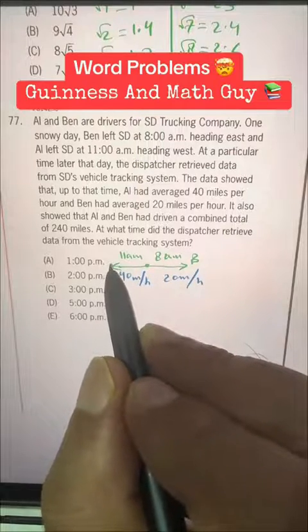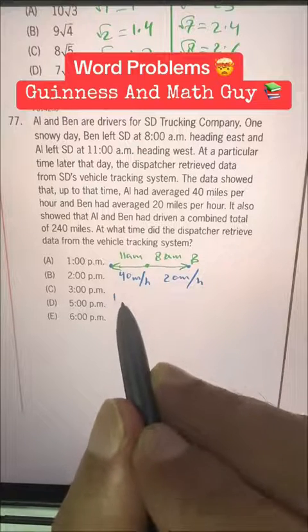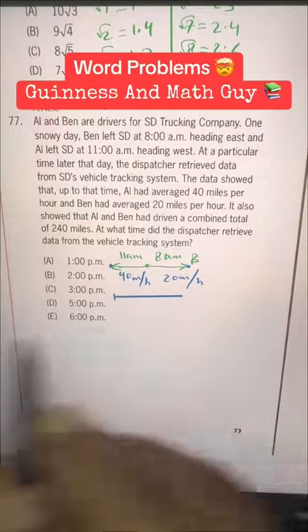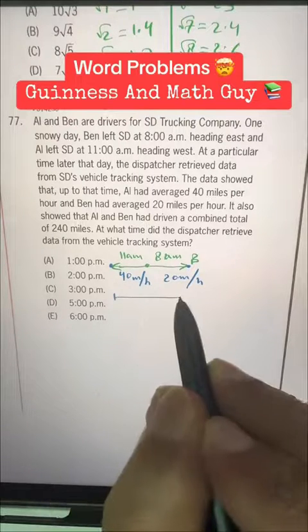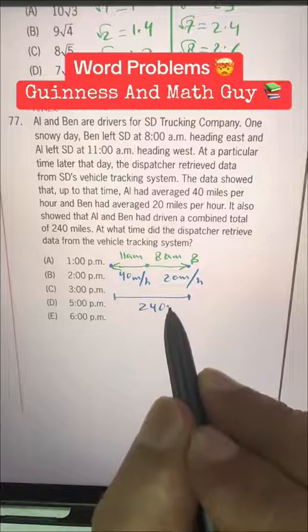let's say Al is here at this point and Ben is here at this point right now. So their total distance is 240 miles right now.